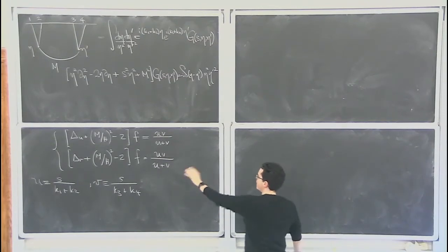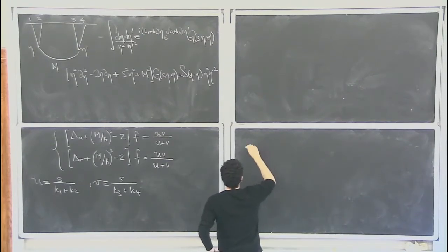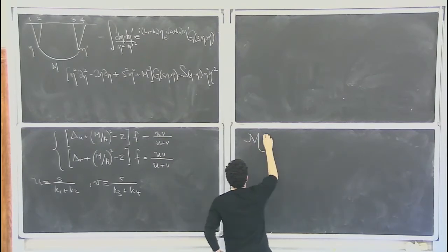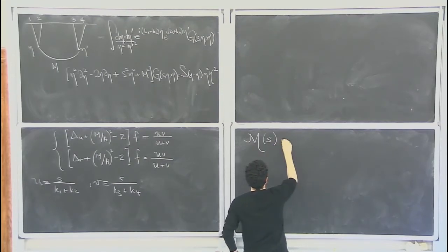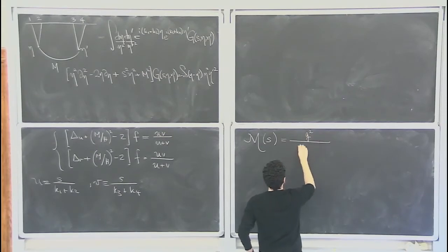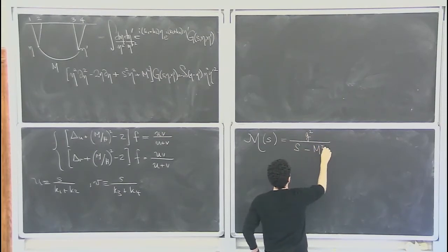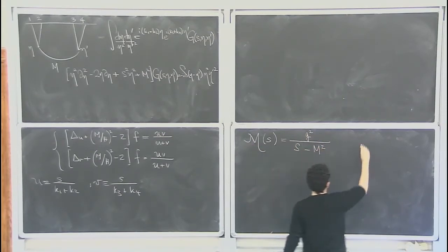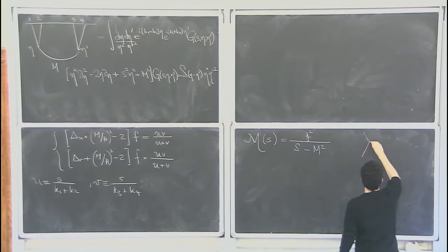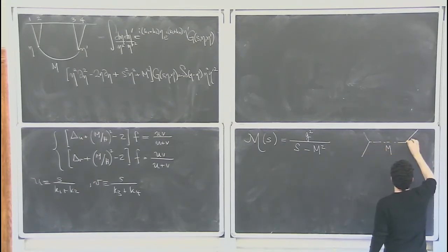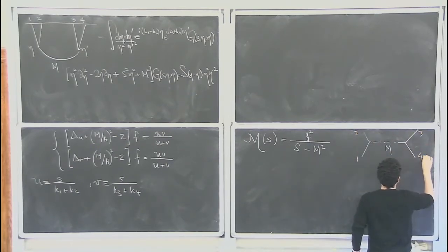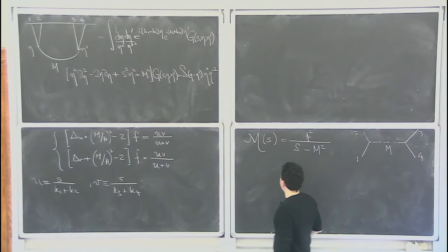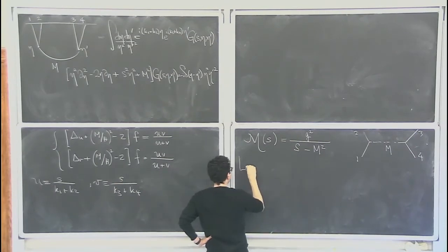Let me make the analogy with scattering amplitudes again. The scattering amplitude has no dependence on the t Mandelstam here — it's like g squared over s minus m squared. We're in flat space, describing this process in which I exchange a particle of mass m with particles 1, 2, 3, 4. Now let's take low energies, which means s much less than m squared.